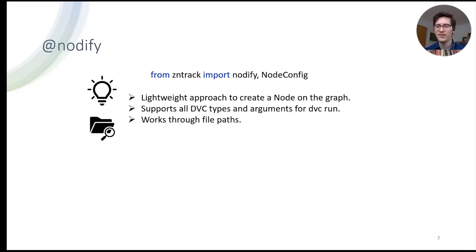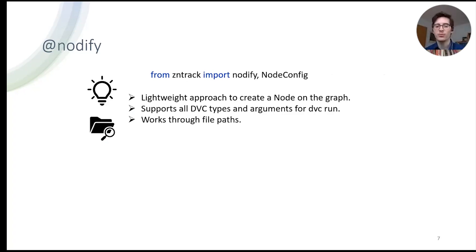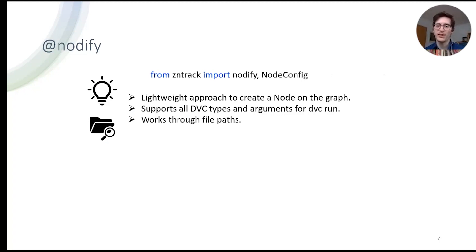So I gave a quick introduction into a very lightweight approach to create a node based on DVC in the graph. You just put the decorator on it, plug in the parameters, define the outputs, and you're basically done. All the outputs of DVC are supported — like plots, metrics, and so forth. And the arguments for DVC run commands like `external` or `always_changed` can be passed through the function call itself. This approach mostly works through file paths.